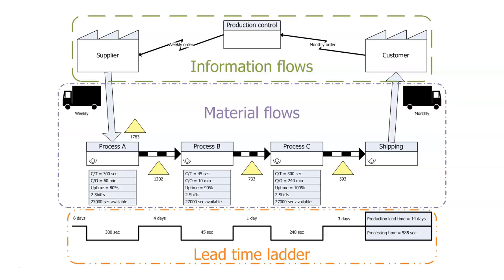It kind of starts with the customer on the right-hand side. We get an idea of what the forecast is, what they're looking for. And that in our production office gives us some idea of what we need to order from our suppliers. So we get this flow of information from the customer to our supplier — that's the flow of information. And then in the middle, we see the flow of materials.